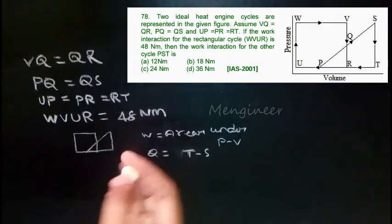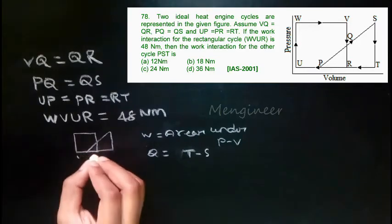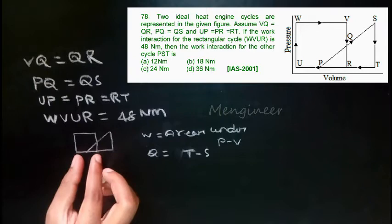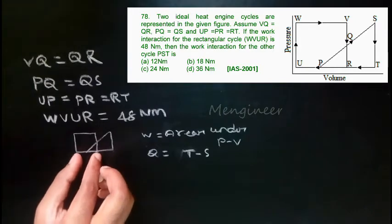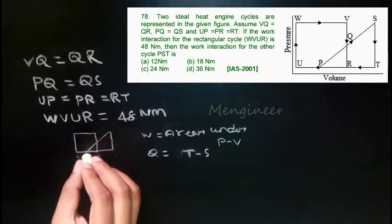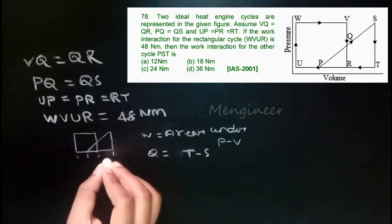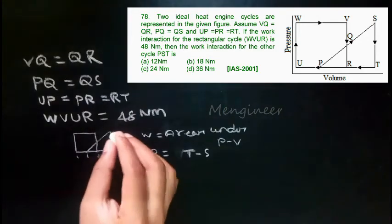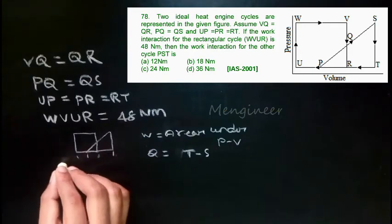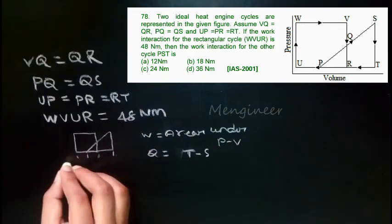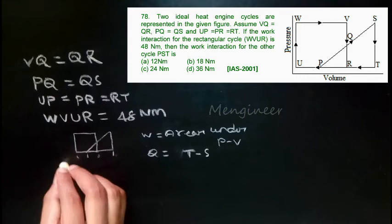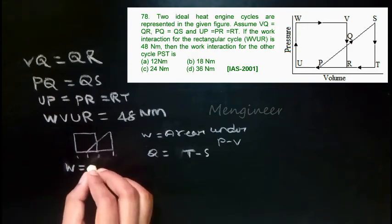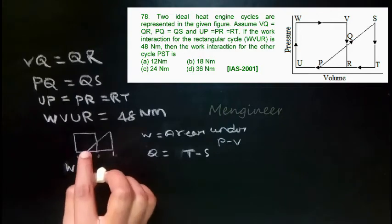As you see, you can clearly identify that these two areas are equal. The area of the base of the rectangle is equal to the area of the base of the triangle. Also, it is given that UP equals RT, so the areas are equal.